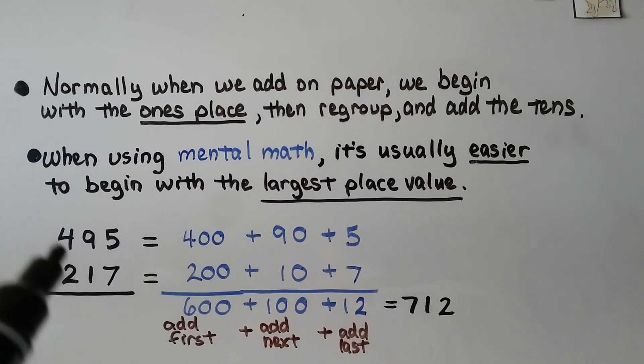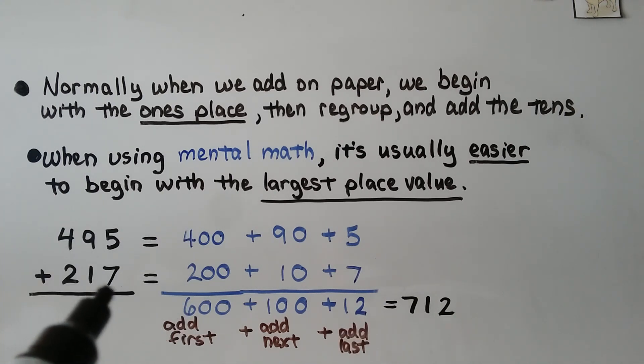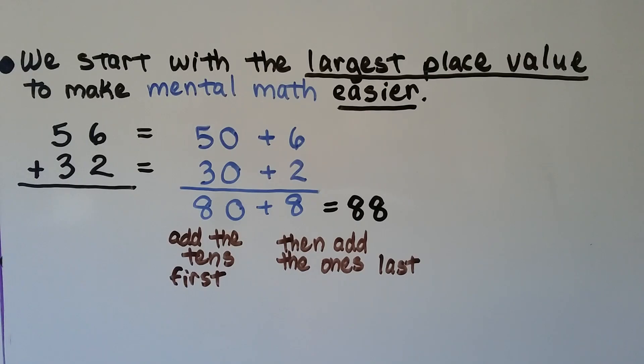So we would have 600, 700, 12. We start with the largest place value and then add on the next ones. So we start with the largest place value to make mental math easier.